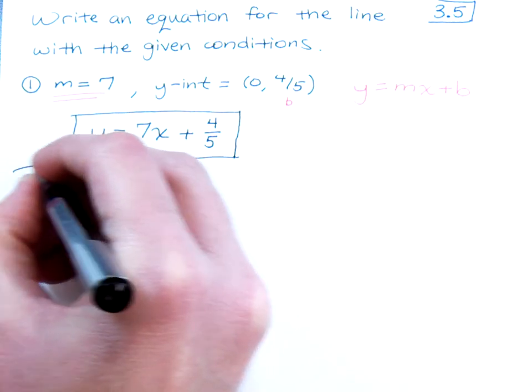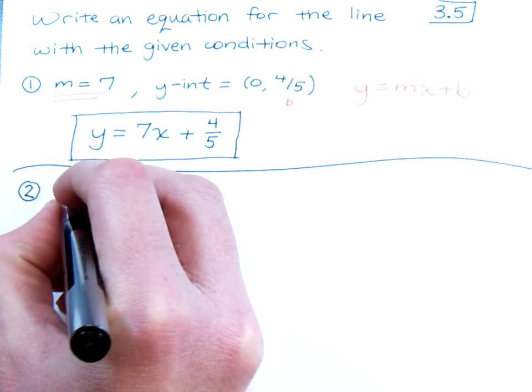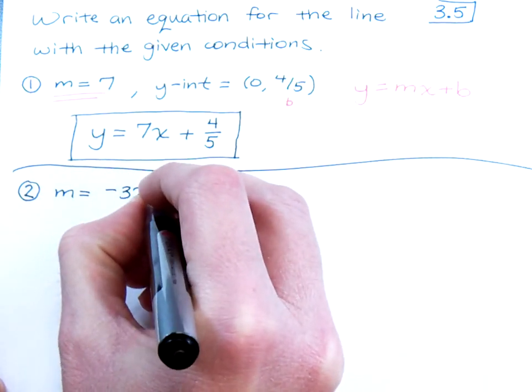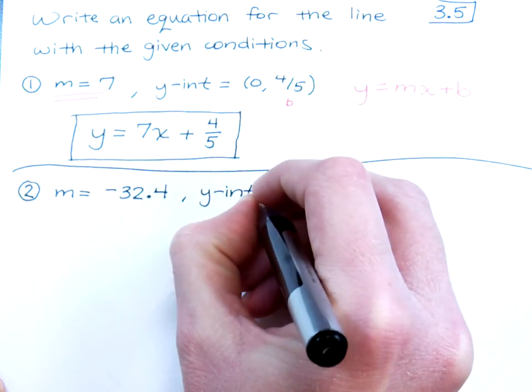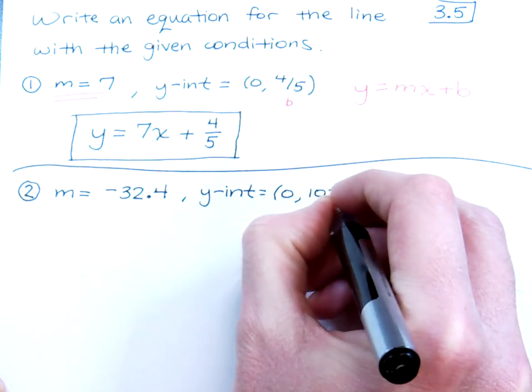Okay, let's do another example. Suppose I tell you that the slope is equal to negative 32.4, and the y-intercept is 0, 103.